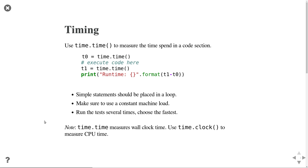As a remark, time.time measures the wall clock time, but you can also use time.clock, which measures the CPU time — the amount of CPU time that the program has actually used. So there are two different ways to measure time in a program.